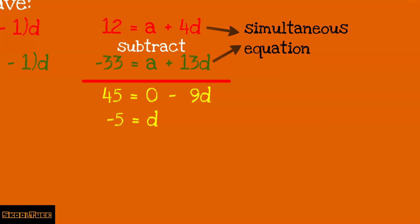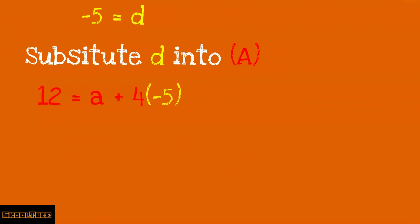We have just solved for the first unknown. Now to solve for the second unknown, we need to substitute the value of d into any one of the equations. When you substitute d into equation a, you get 12 equals a plus 4 multiplied by negative 5. And that is why a equals 32. Now remember that a is our first term.